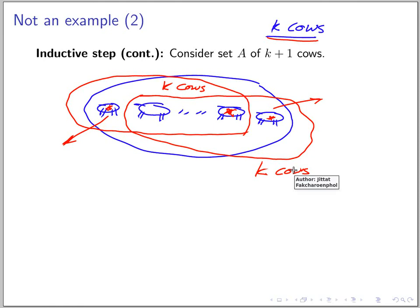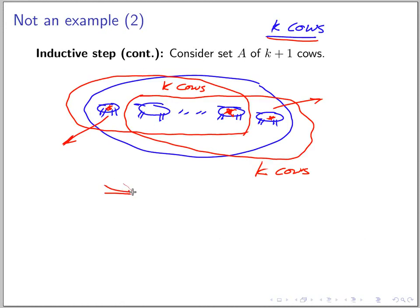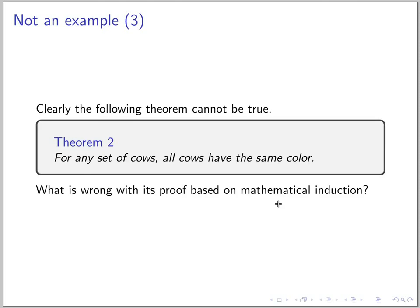Therefore, we have established the base case and the inductive step, so this implies that P(K+1) is true. We conclude that for any set of cows of size N, all cows have the same color. Clearly this theorem cannot be true, because otherwise we'd see all cows the same color. So what is wrong with this proof? I'll end this clip here so you can think about it, go back and try to figure out where it goes wrong, and we'll discuss that in class.